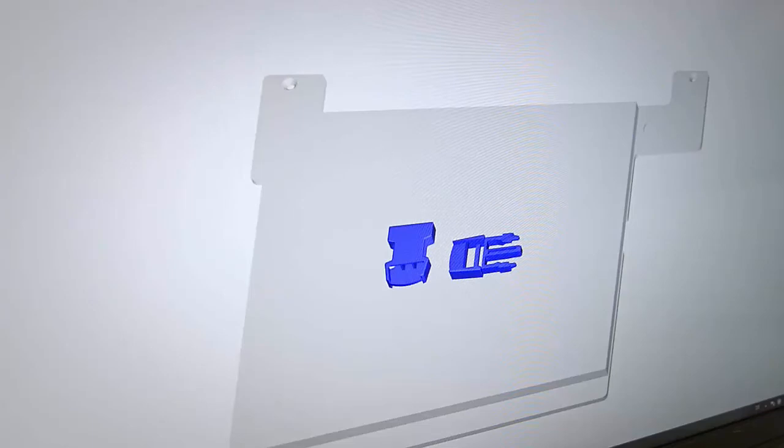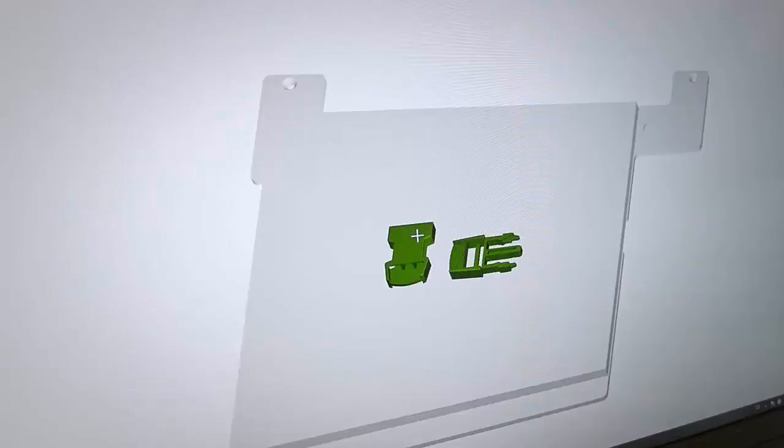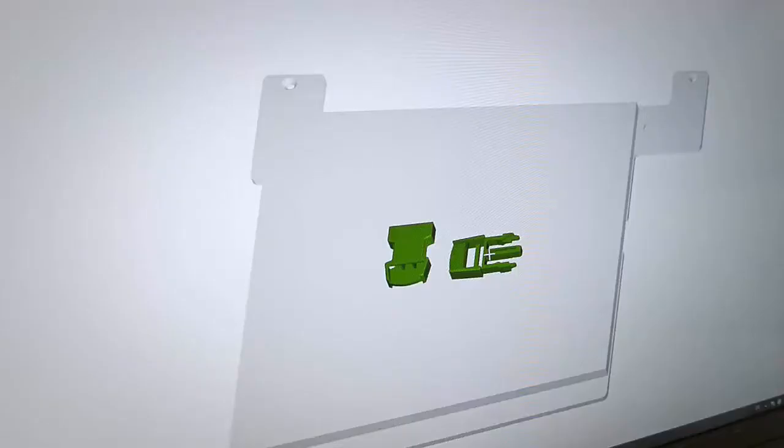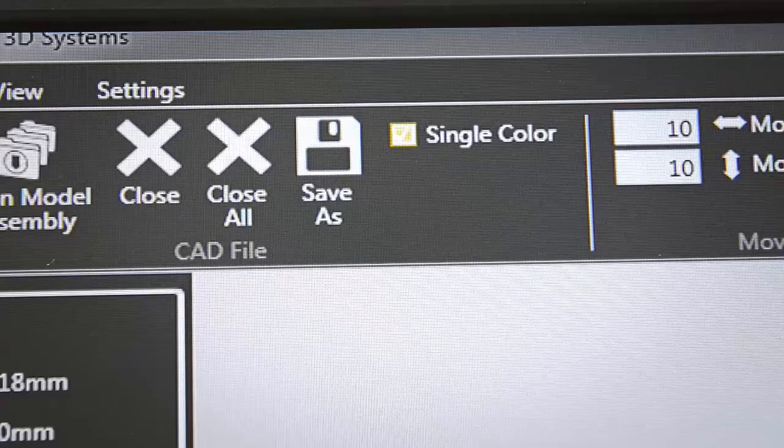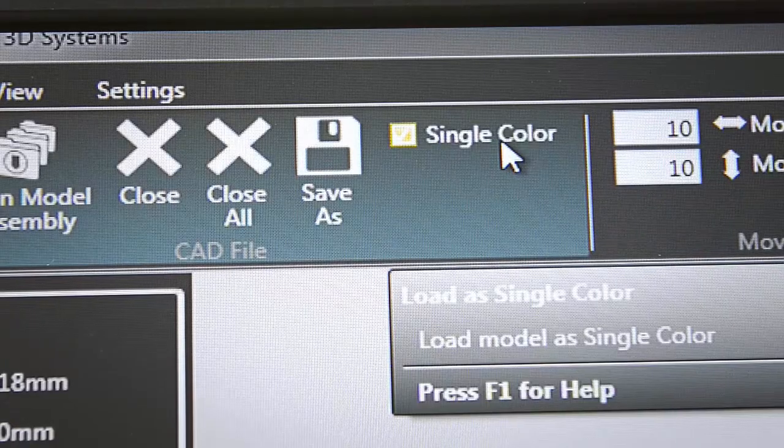Cube Pro does have the ability to print with multiple colours, albeit the model design needs to be sectioned correctly to allow this to happen. The actual available build area shown is smaller than the overall chamber size, seems due to the three jets mounted across the X axis. The default is set to single colour, so when selecting multi-colour, all you need to do is deselect single colour.